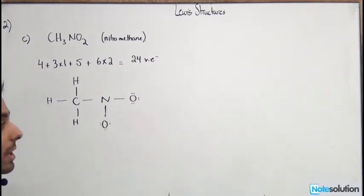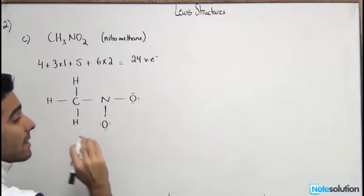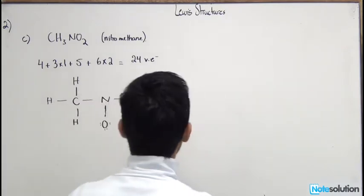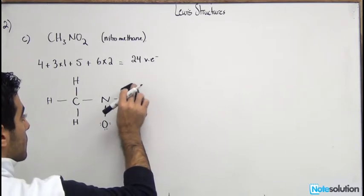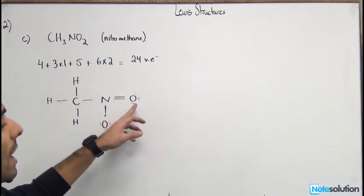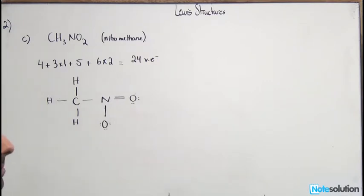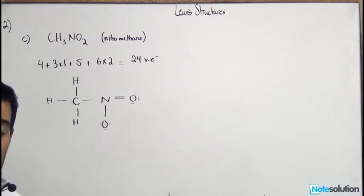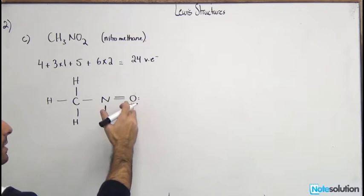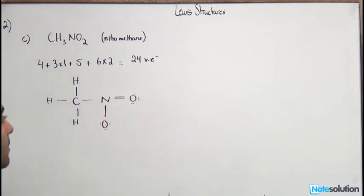After distributing the remaining twelve electrons to the oxygens, nitrogen has only six electrons and needs eight. Carbon is satisfied. We move one lone pair from one of the oxygens to form a double bond with nitrogen, satisfying nitrogen's octet. Note that we could take the lone pair from either oxygen, and we'll discuss this later when we cover resonance structures.